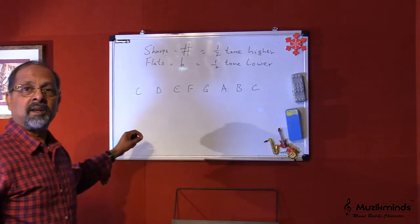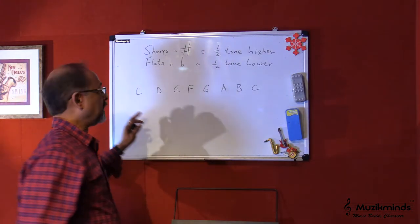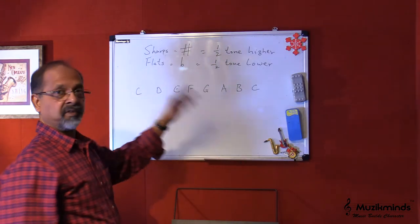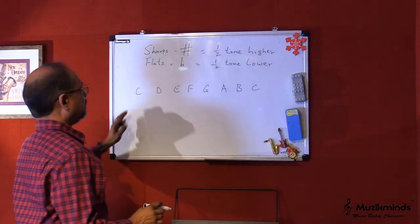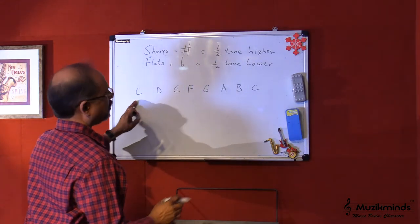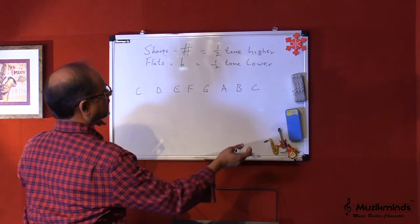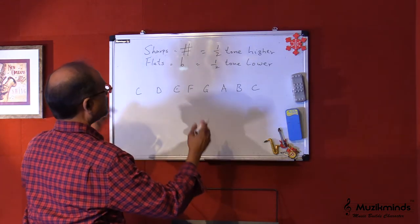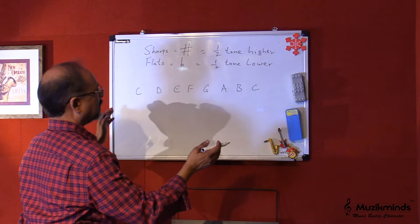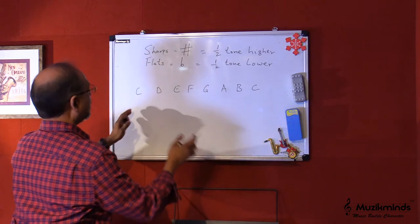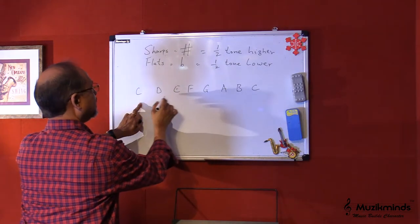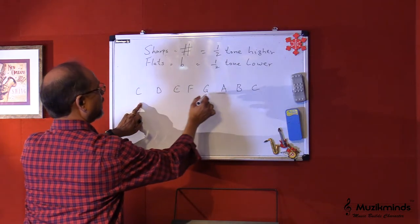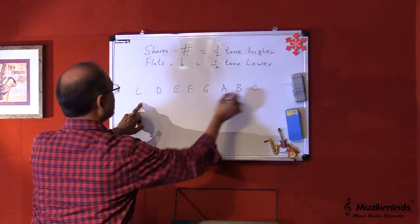Now what does that mean in terms of the music? We saw in the last session we spoke about the music scale. The music scale is C, D, E, F, G, A, B, C.